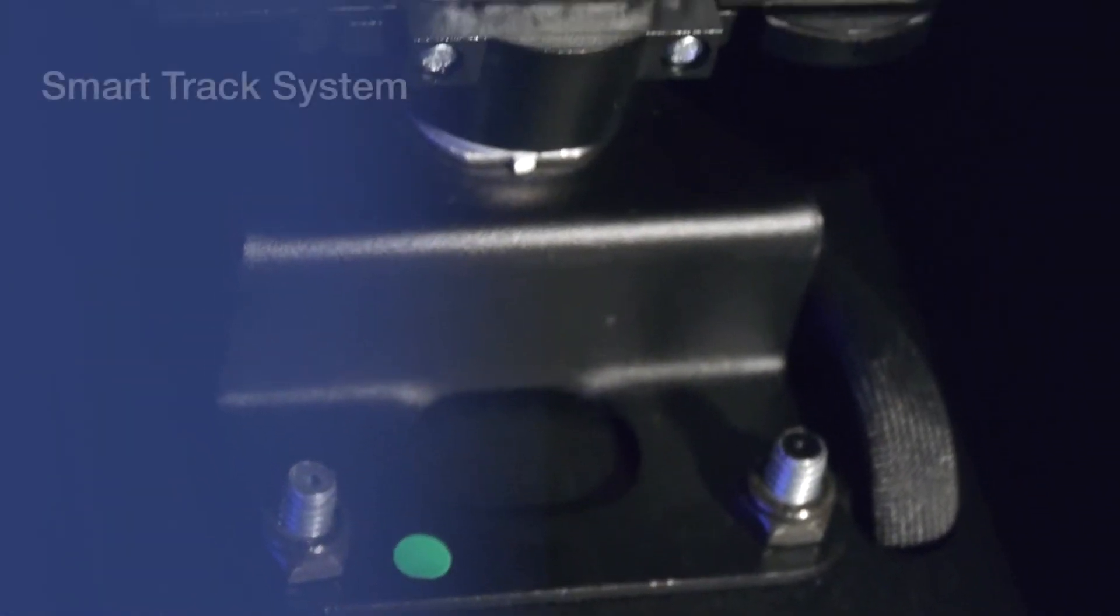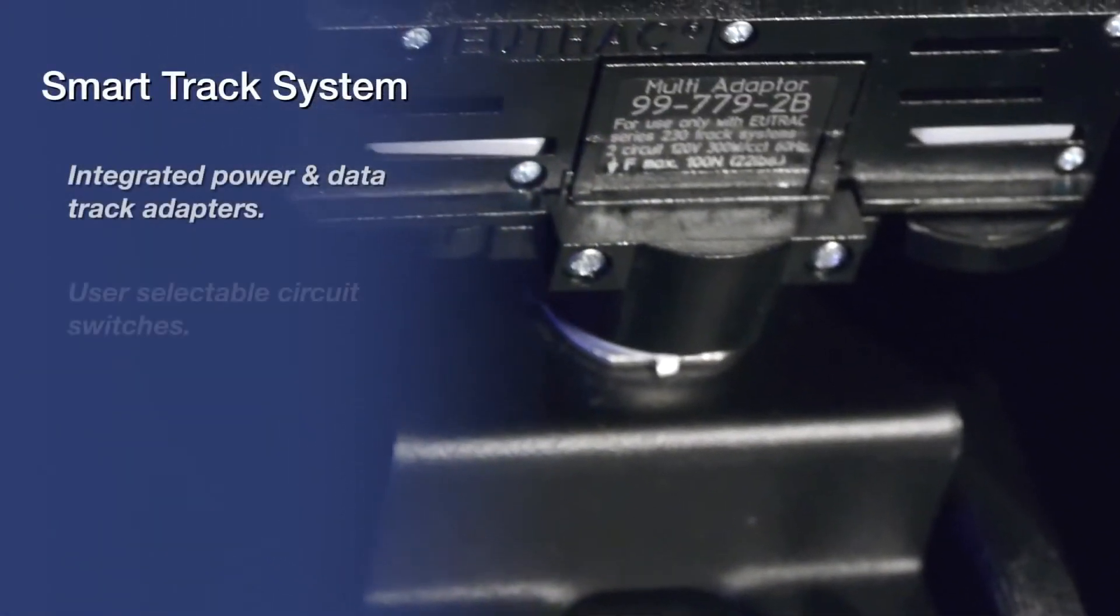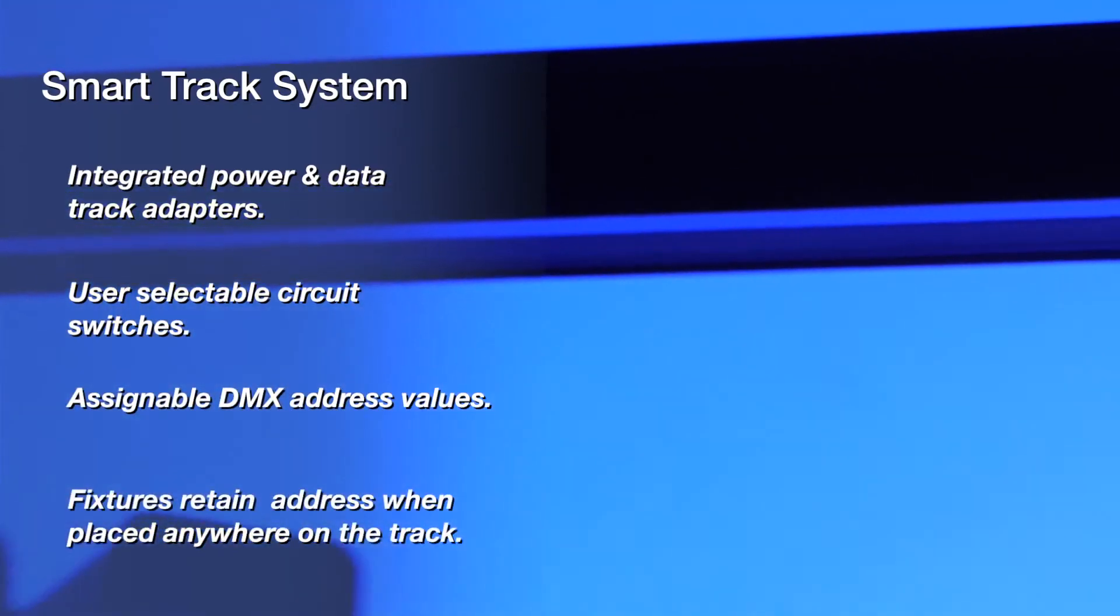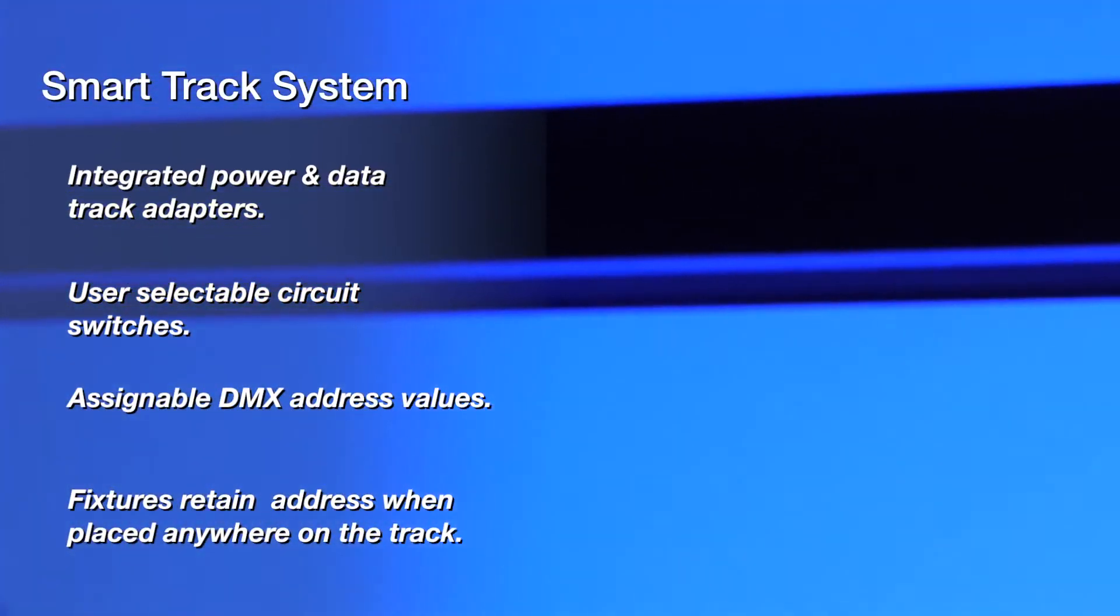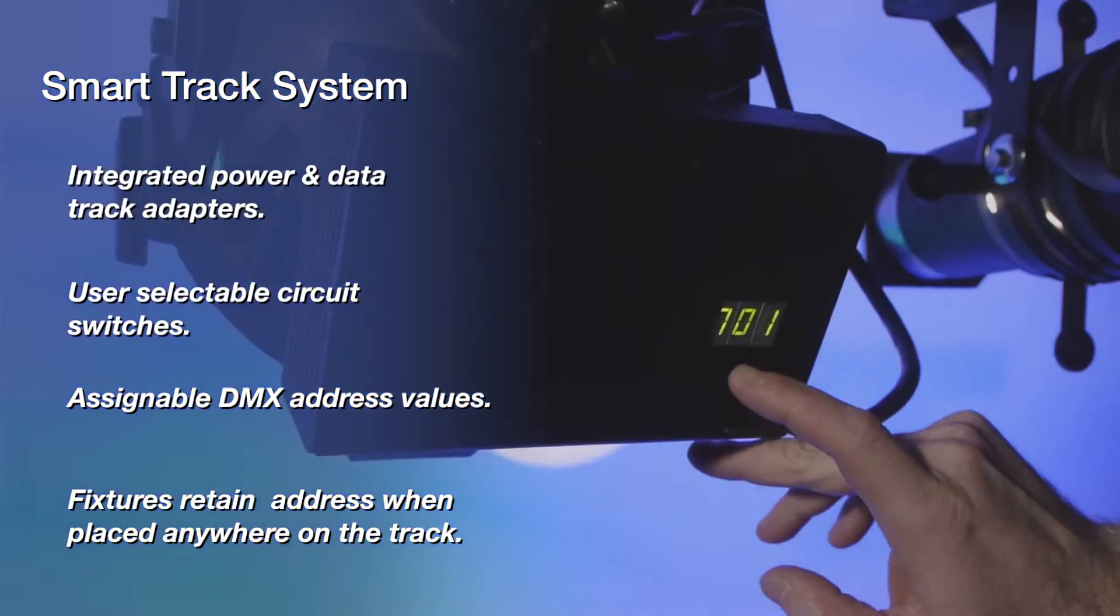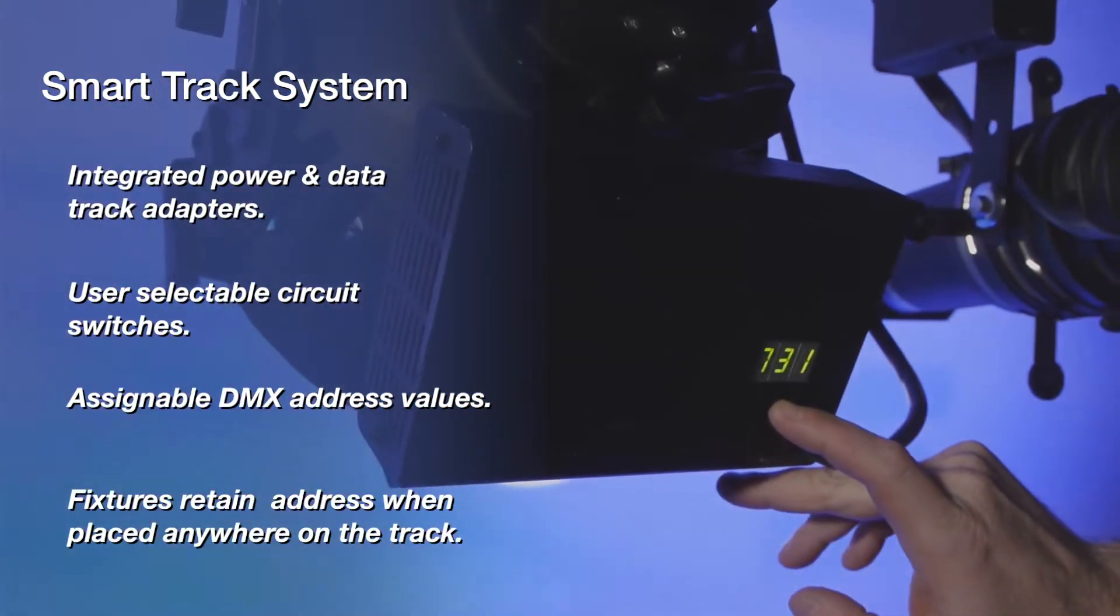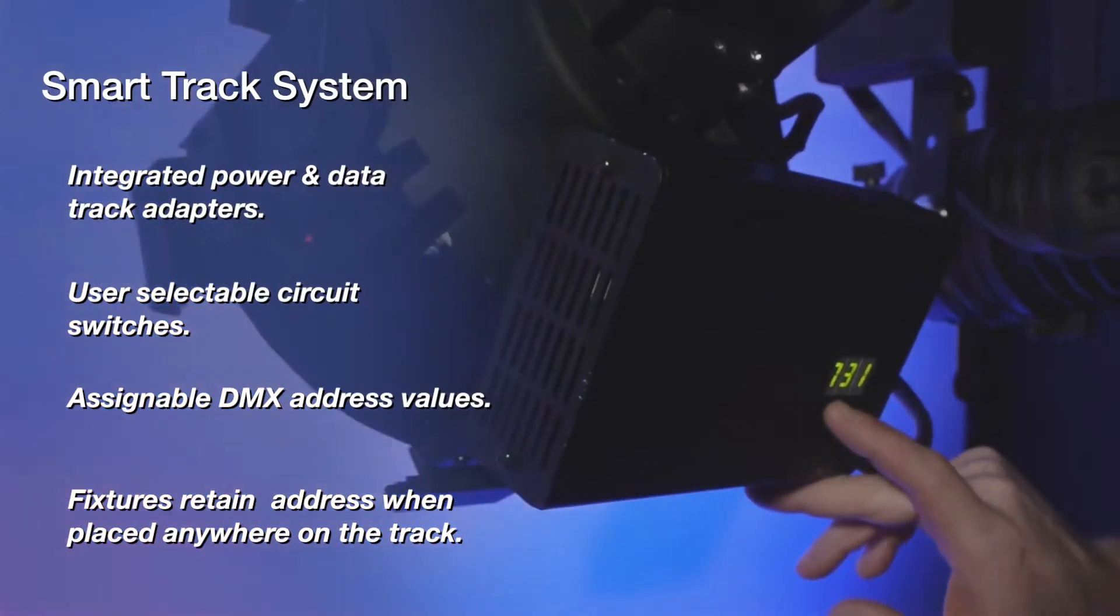Each fixture attaches to the track using the integrated power and data track adapter. Once the adapter is seated in the track and locked into place, the end user can select either circuit one or two to power the fixture. Once connected, the fixture can be addressed using rotary dials or a digital display to an assigned DMX address.